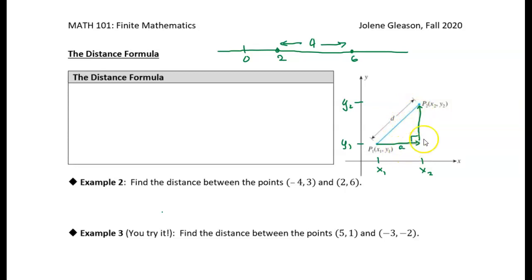And if we call this side a and this side b, then we know that the distance that we're trying to find, d squared, is equal to a squared plus b squared. Now the distance in the a direction is the difference between these two points. It's x2 minus x1, because it's just the distance on a number line.